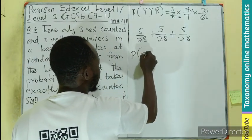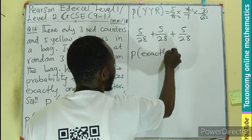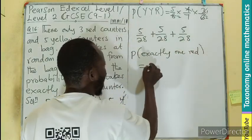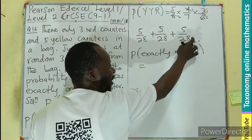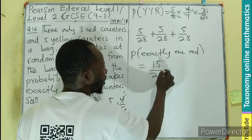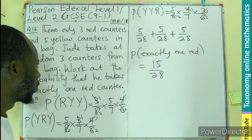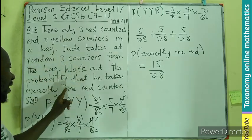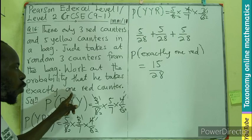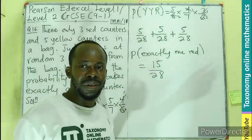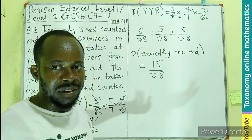meaning the probability of exactly one red will now become the same denominators. So we add the numerators: 15 divided by 28. So the probability that Jude will be picking three counters, whereby he will pick exactly one red counter, will be 15 divided by 28. I'm sure this is correct.